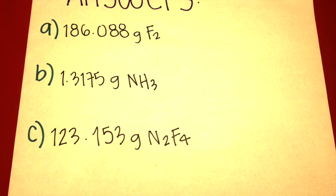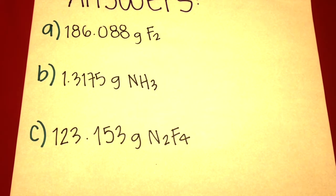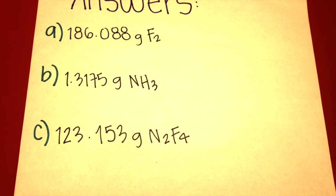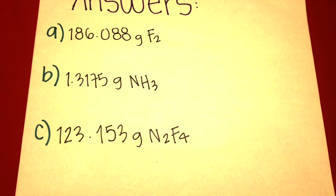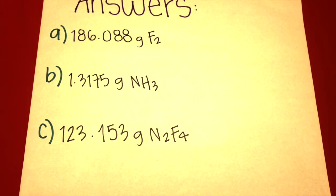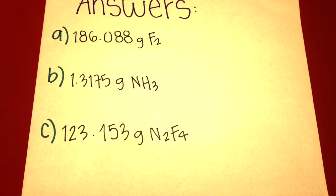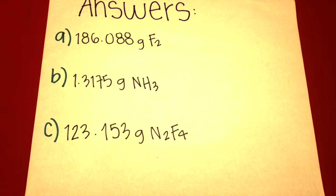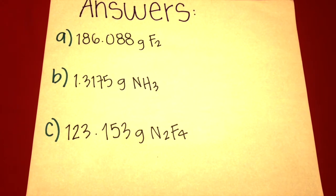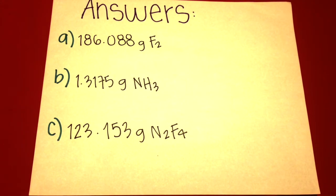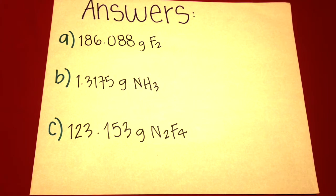Now let's review the answers. For question A, the answer was 186.08 grams of fluoride. For question B, the answer was 1.3175 grams of ammonia. And for question C, the answer was 123.153 grams of dinitrogen tetrafluoride.